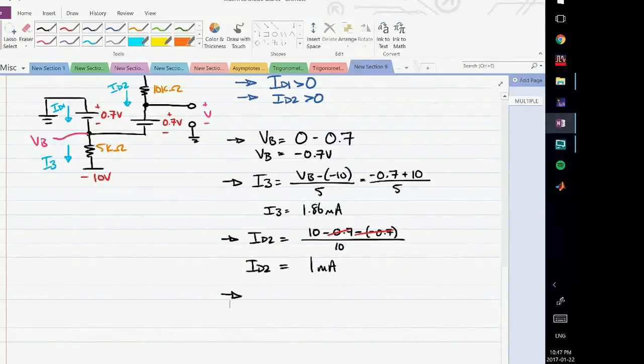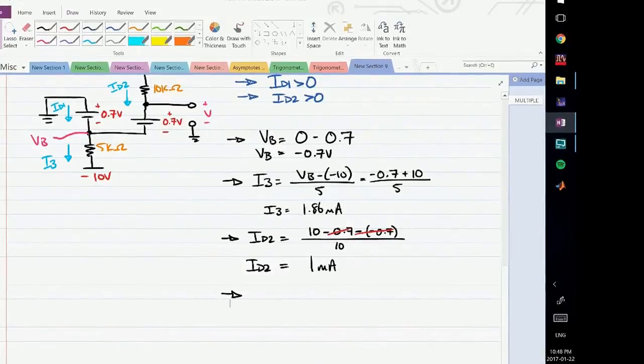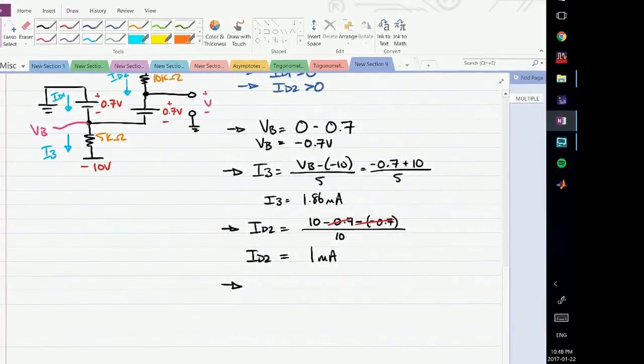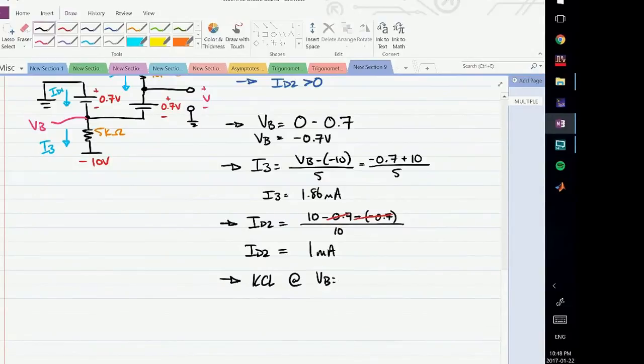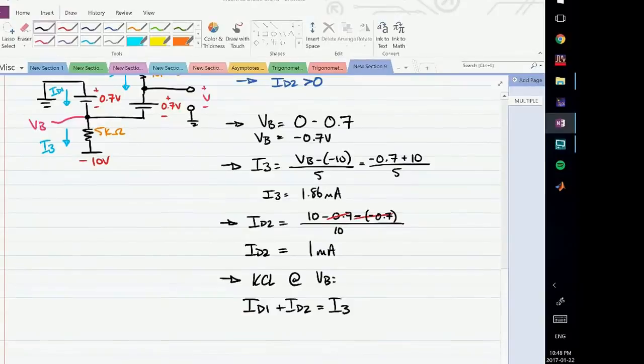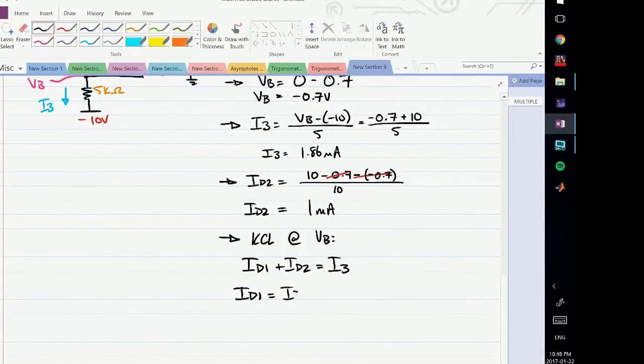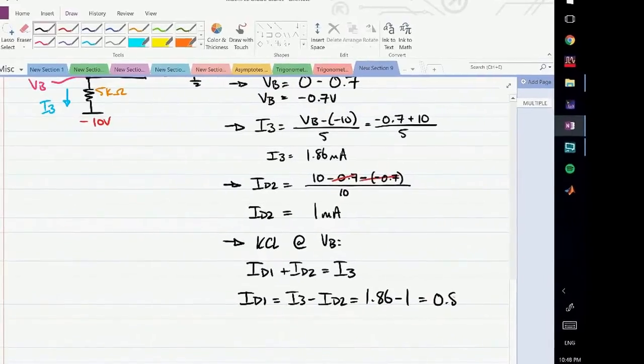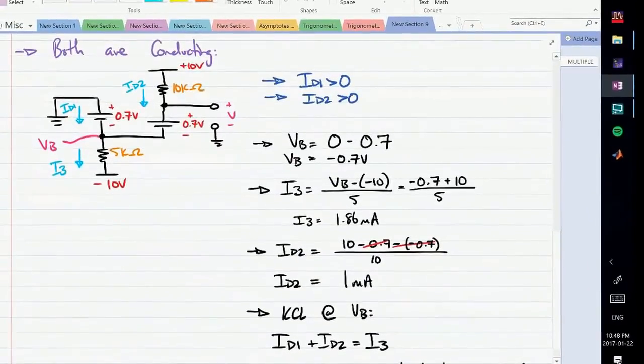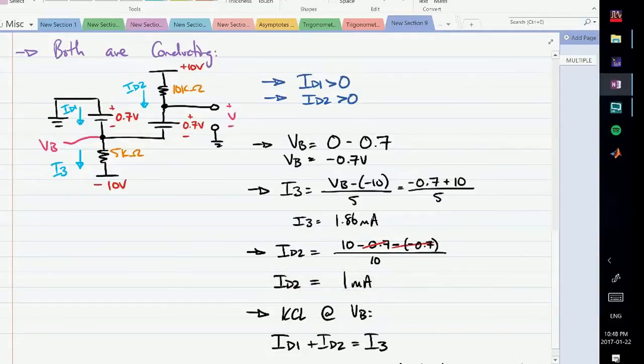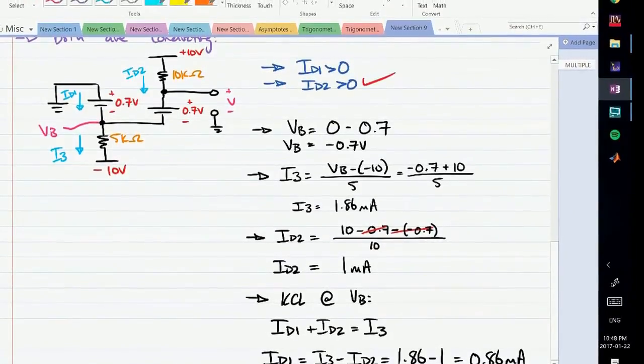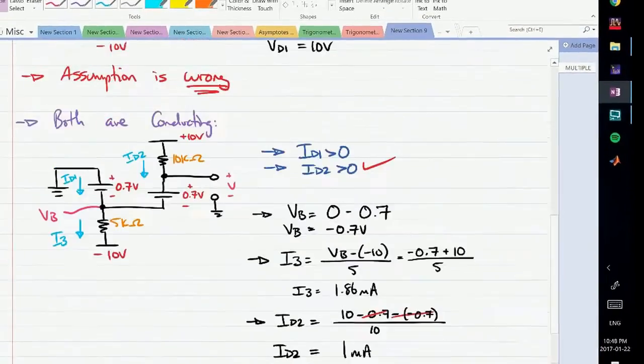Now, how do we find ID1? There's no resistances there, so it's difficult to determine using Ohm's Law. However, we can use KCL. If we say KCL at VB, we have ID1 coming in, ID2 coming in, and that equals I3 because I3 is leaving. We know I3, we know ID2, we can find ID1. So ID1 equals I3 minus ID2, which is 1.86 minus 1, which is 0.86 milliamps. We go back to our conditions - are they met? ID2 has to be greater than 0 - it equals 1, so the first condition is satisfied. ID1 is 0.86, also greater than 0. This condition has also been satisfied. Therefore, our conduction states drawn in this circuit are valid.